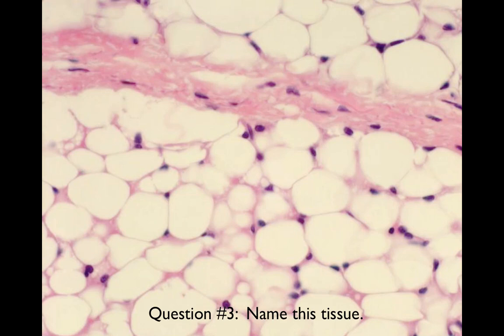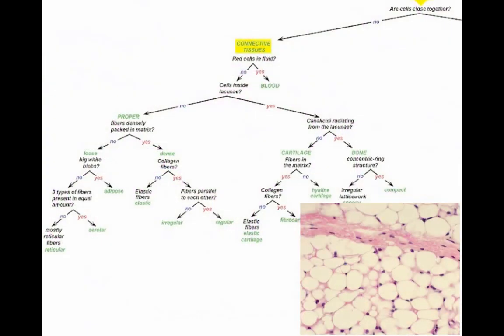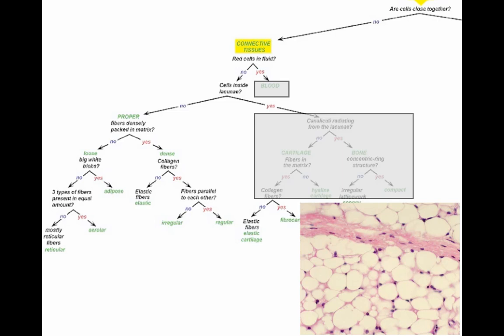What about this one? Name this tissue. So again, first question: are the cells close together? And the answer is certainly not. Are the cells in a fluid? No. Are the cells inside lacunae? Do you see any kind of depression where the cells are sitting? No. I don't see that. Are there fibers that are densely packed in a matrix? No. I don't see any fibers in here at all.